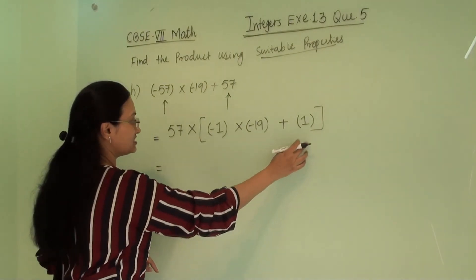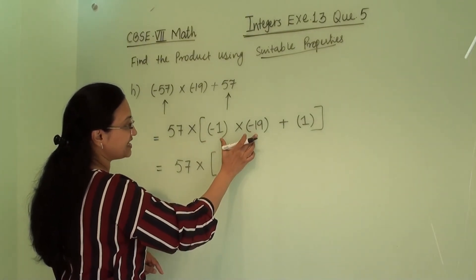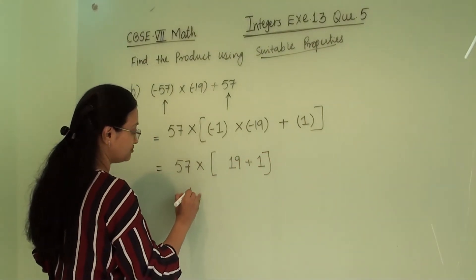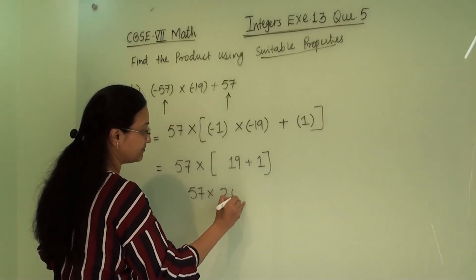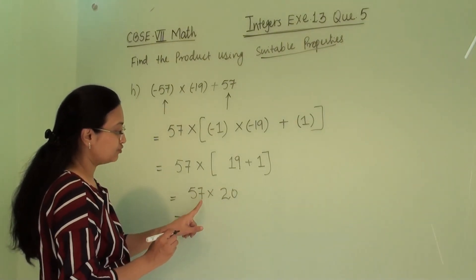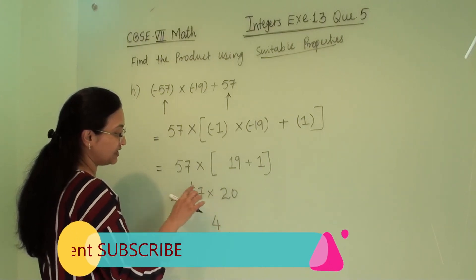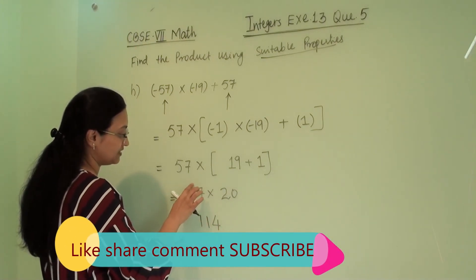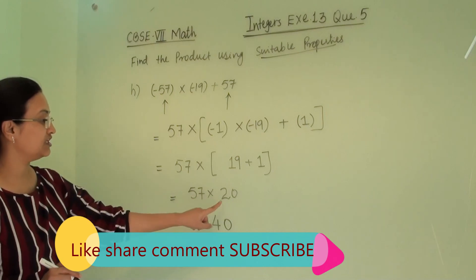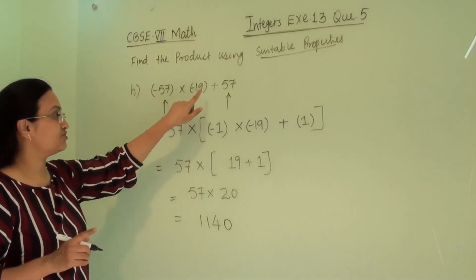Now solving the bracket: (-1) × (-19) + 1 = 19 + 1 = 20. So 57 × 20. Doing row multiplication: 57 × 2 = 114, so 57 × 20 = 1140. Both integers are positive, so the answer is +1140. This property is the distributive property of multiplication over addition.